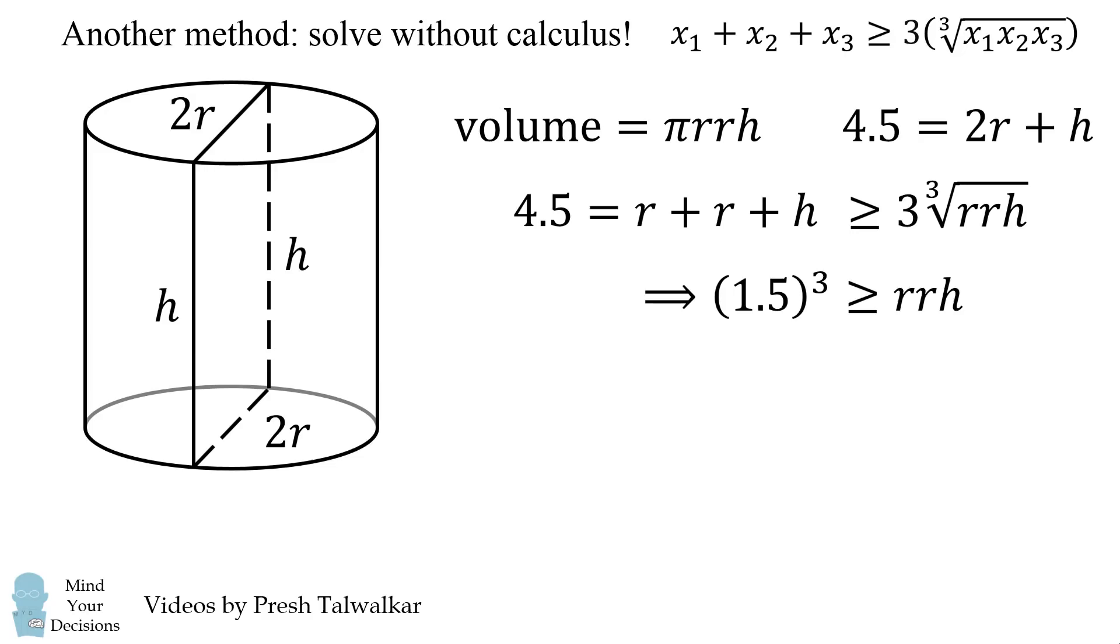So, if we maximize r times r times h, we'll get the maximum volume. This will happen if all variables are equal to each other. The maximum occurs if h is equal to r is equal to 1.5, and we immediately figure out that r is equal to 1.5 is the value for the radius.